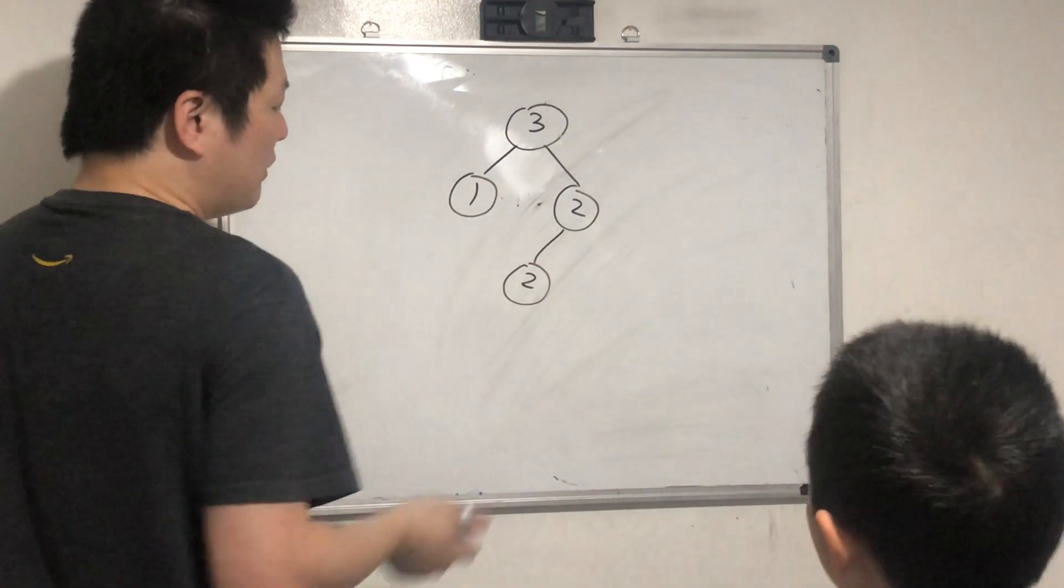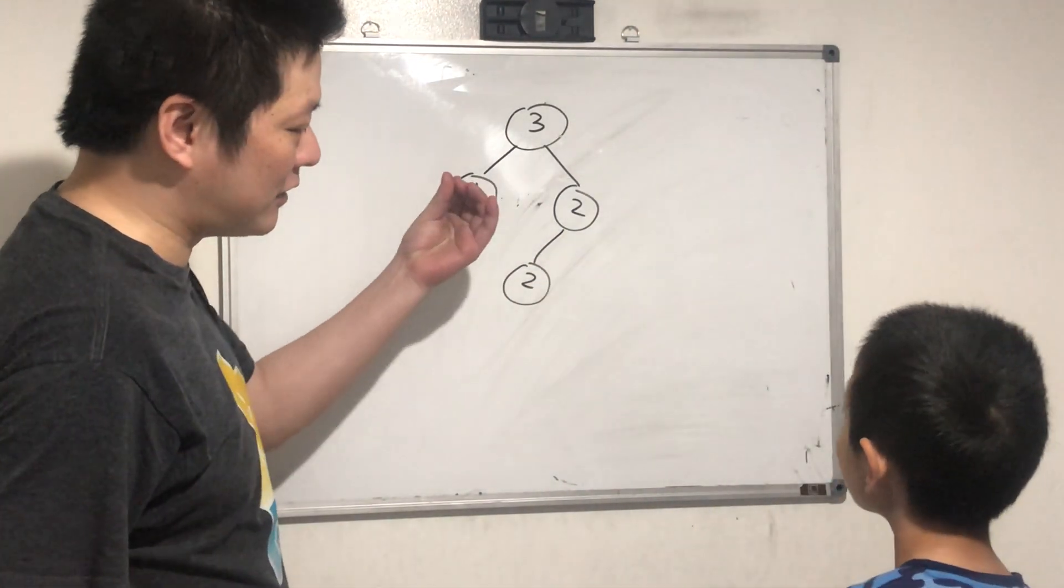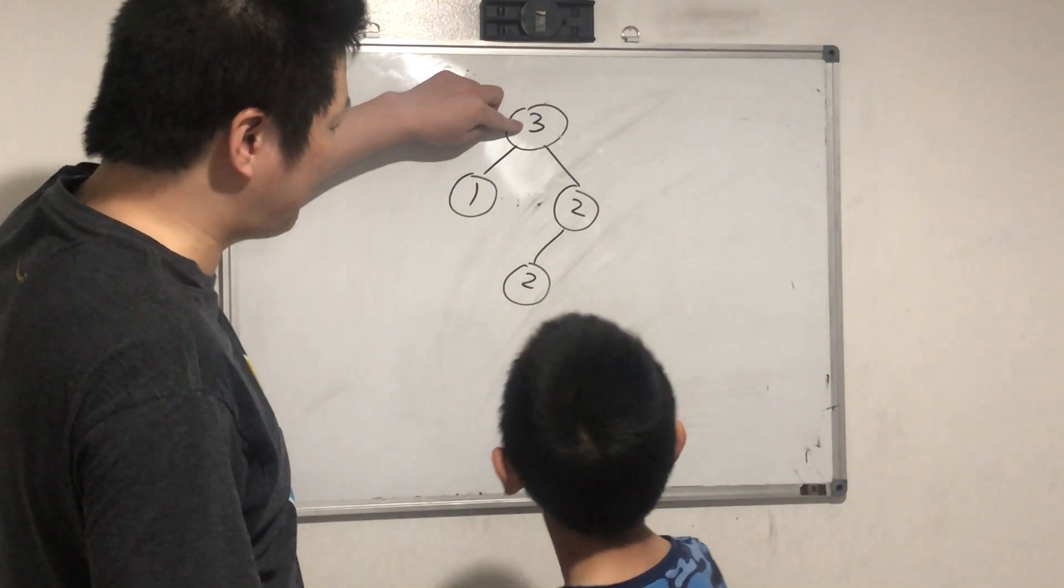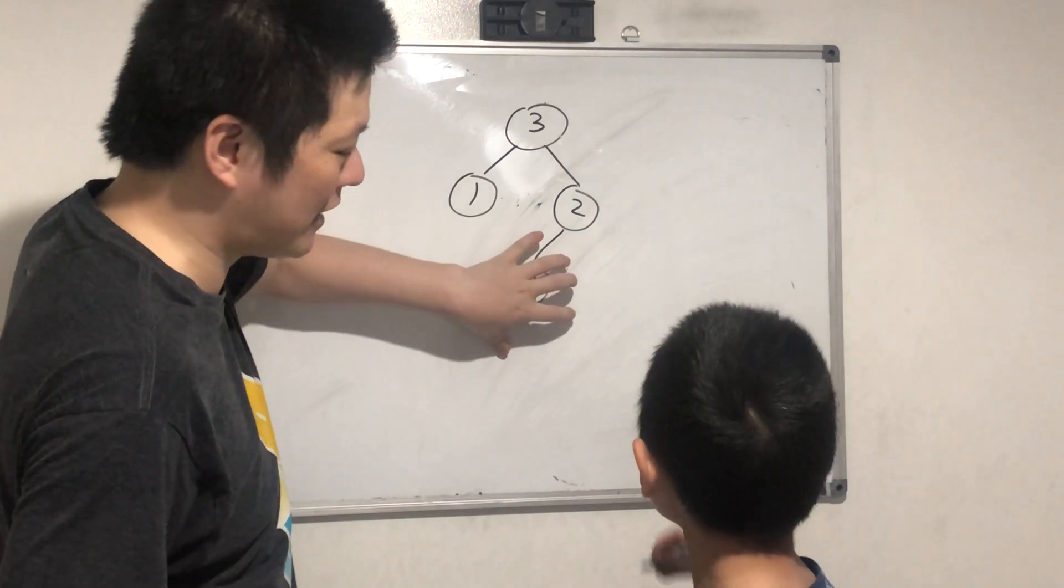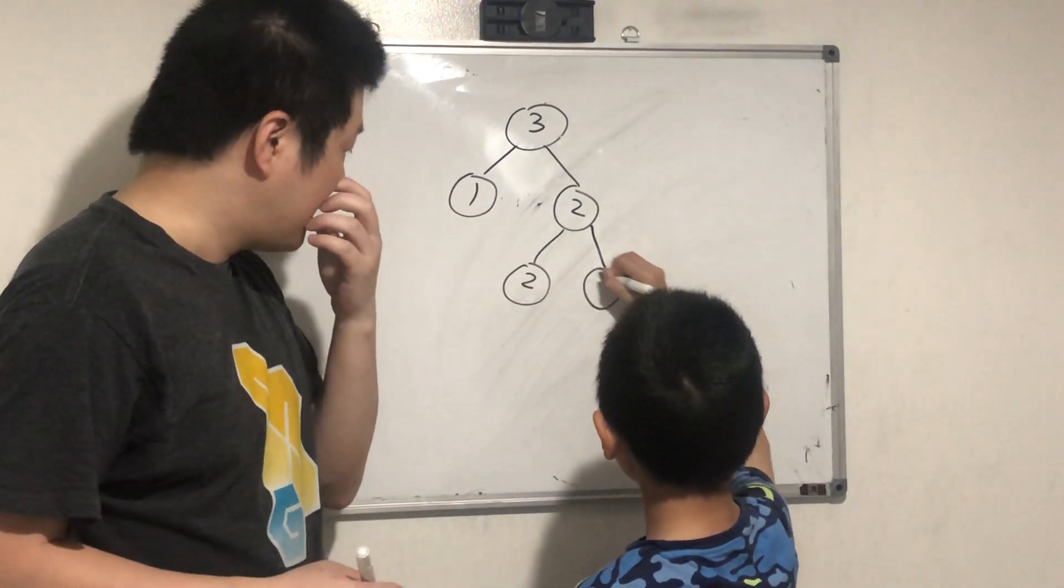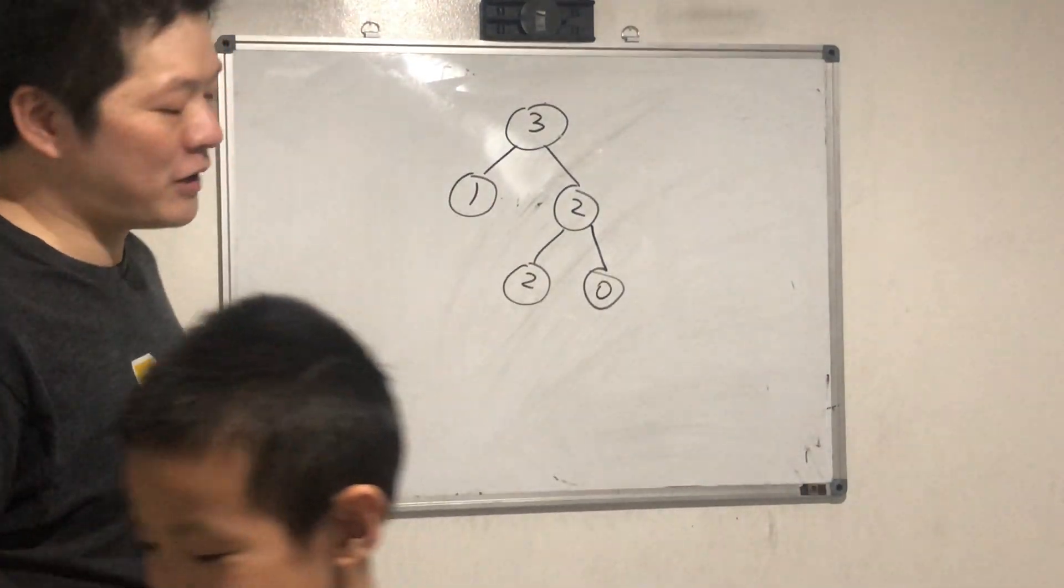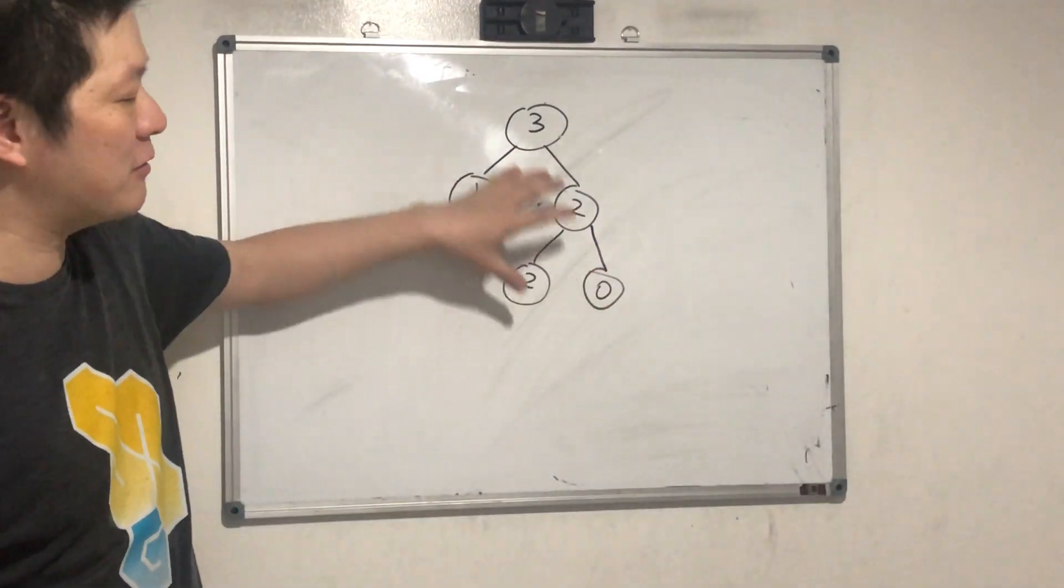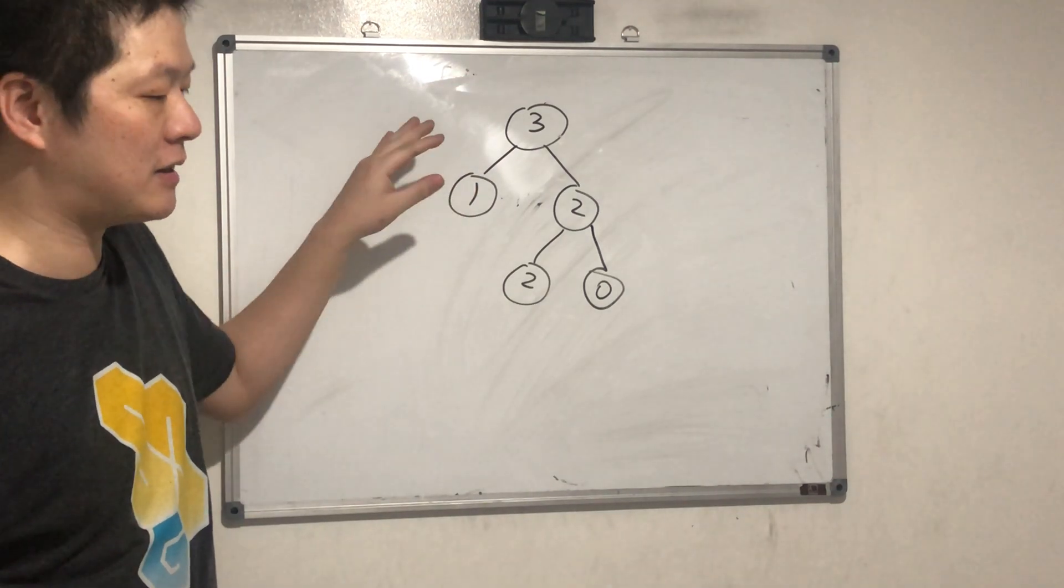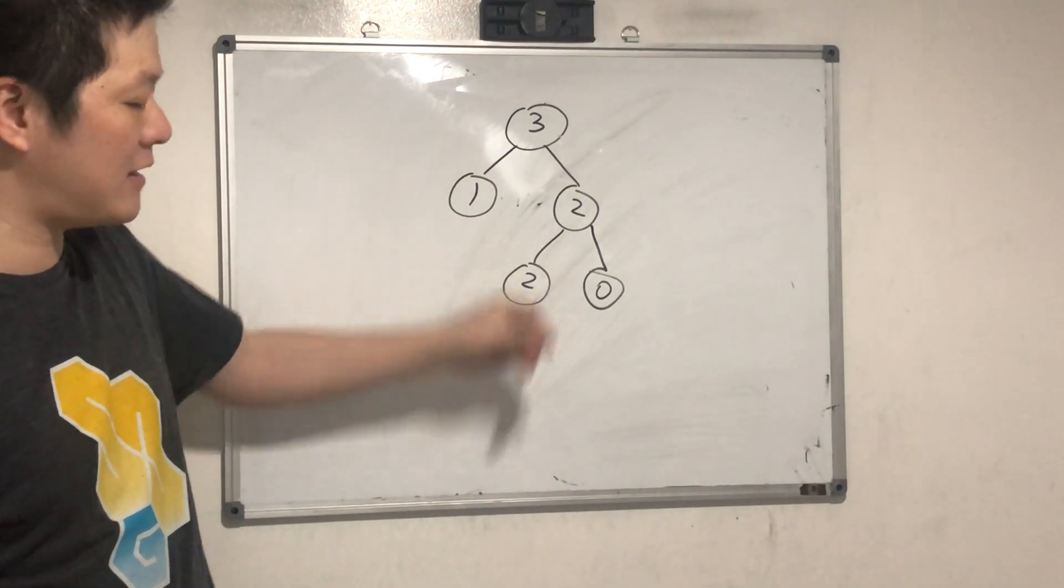So if it equals the sum of its kids, right? For example, the three equals one plus two, and two equals zero plus two, right? Except the leaf node, then it's fine. Yeah, if it has two kids. If all the nodes except the leaf nodes equal the sum of their kids, then it's a sum binary tree.